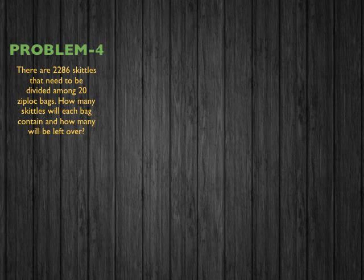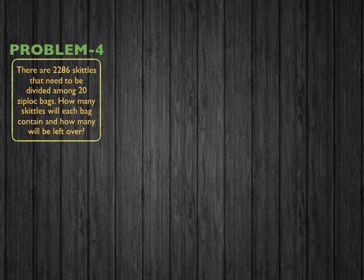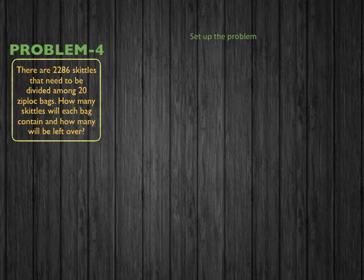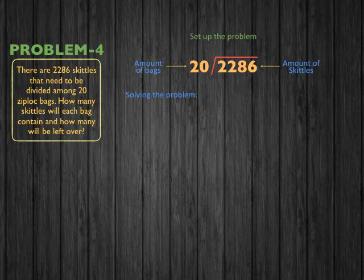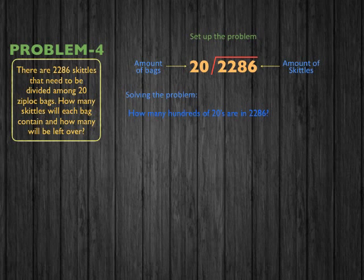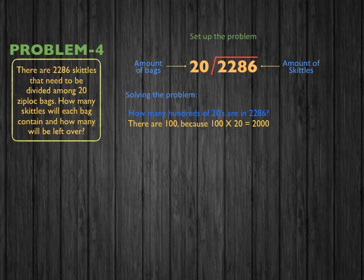Okay, this is problem 4. There are 2,286 Skittles that need to be divided among 20 Ziploc bags. How many Skittles will each bag contain and how many will be left over? First, we set up the problem: 2,286 Skittles divided among 20 Ziploc bags. Using the scaffolding method, we ask how many hundreds of 20s are in 2,286. There are 100, because 100 times 20 equals 2,000.